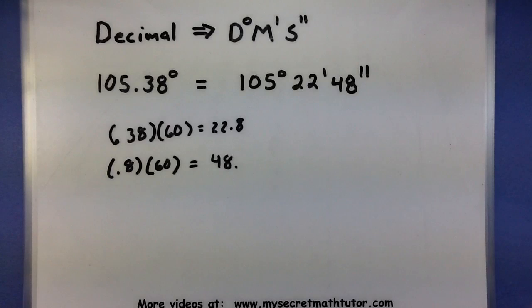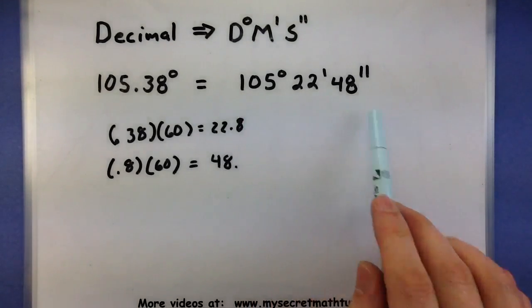So in summary, remember that when it's written in degrees, minutes, and seconds, you go through a division problem in order to do the conversion. If it's written as a decimal, then you go through a multiplication problem to get it into degrees, minutes, and seconds.